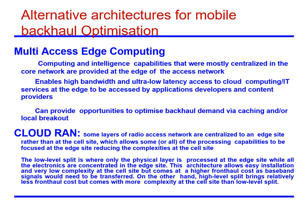Cloud-RAN comes in two forms: low-level and high-level splits, which significantly reduce complexities and capabilities at the cell site to be concentrated at the edge site. The low-level split is where only the physical layer is processed at the edge site while all electronics are concentrated there — this allows easy installation and very low complexity at the cell site but comes at a higher fronthaul cost as baseband signals need to be transferred. The high-level split brings relatively less fronthaul cost but comes with more complexity at the cell site than the low-level split.